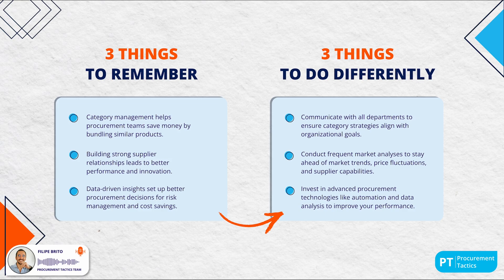Before we wrap up, here are three things to remember. First, category management helps procurement teams save money by bundling similar products, allowing for more strategic sourcing and cost efficiency. Second, building and maintaining strong supplier relationships leads to better performance, innovation and long-term mutual benefits. Third, using data-driven insights ensures procurement decisions are more informed, helping to optimize costs, manage risks and drive better procurement outcomes overall.